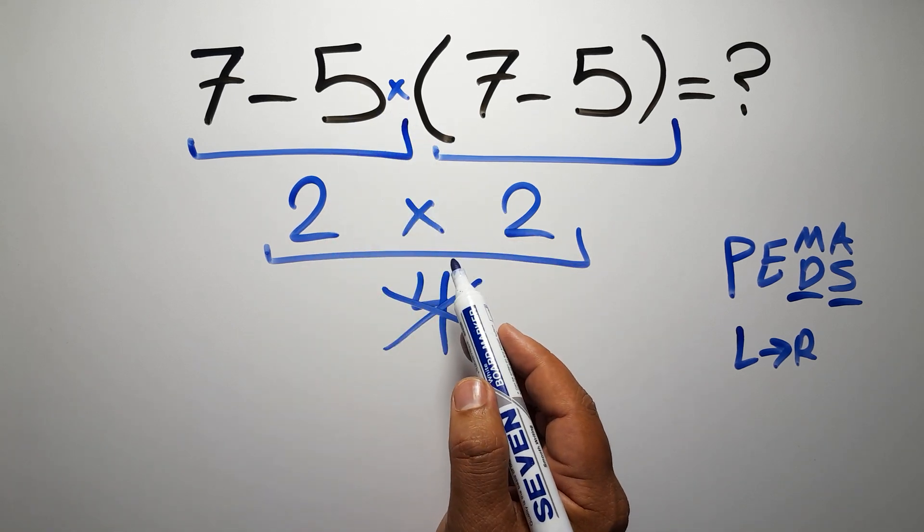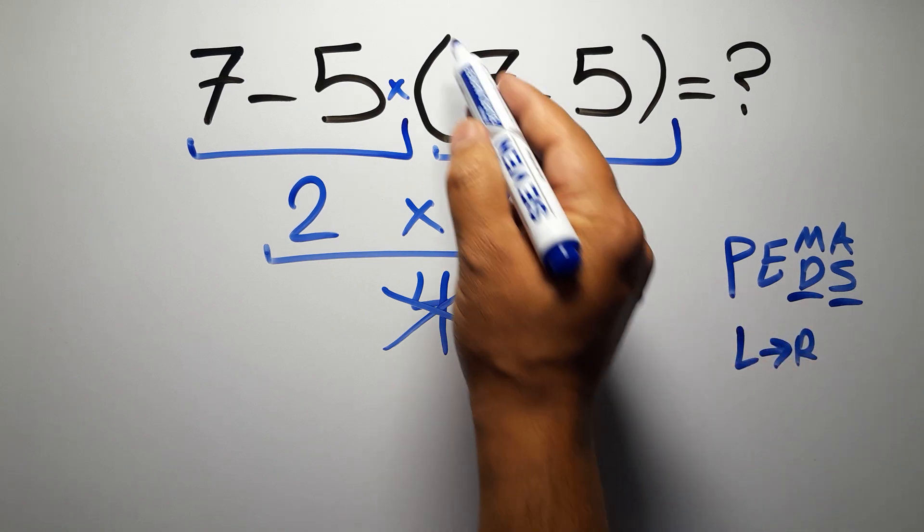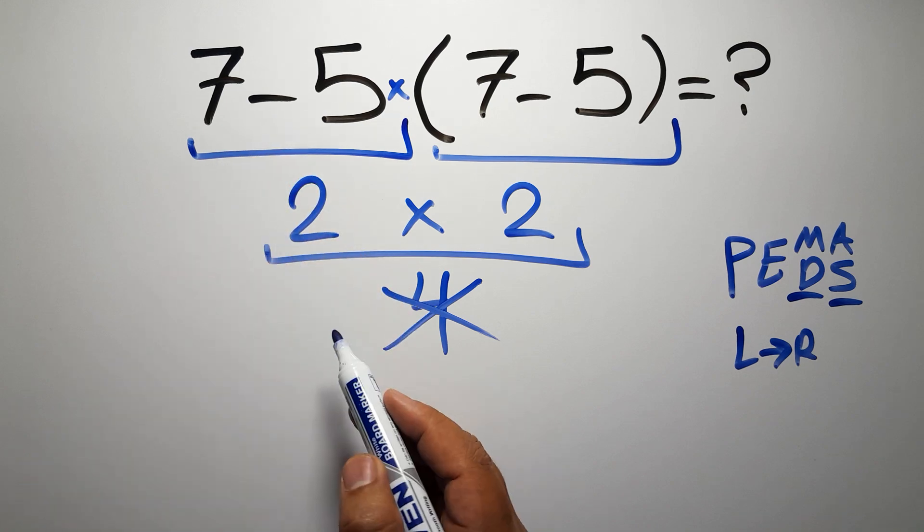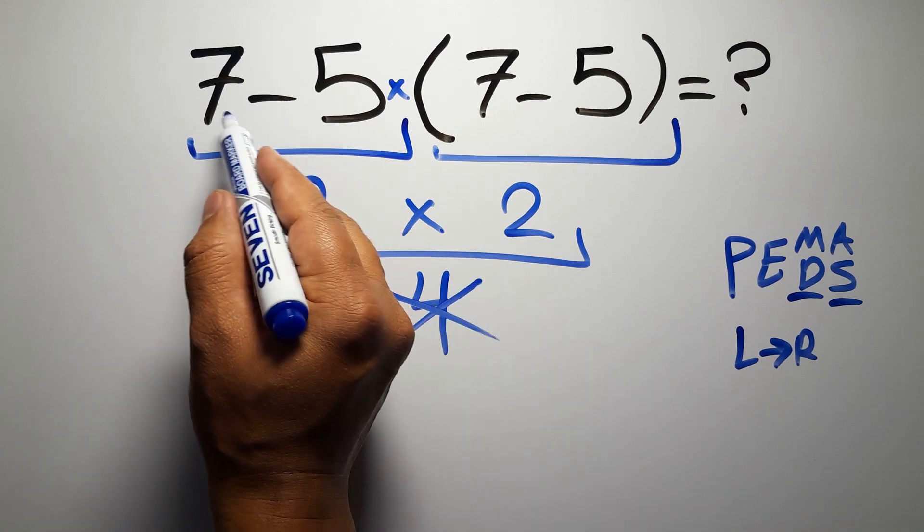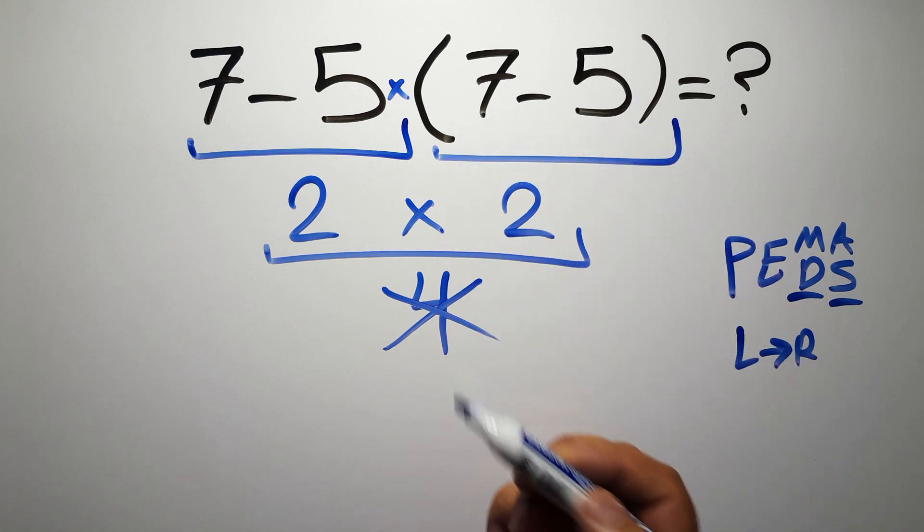So according to PEMDAS, first we have to do this parentheses, then this multiplication, and finally this subtraction. If we do this subtraction before this multiplication or this parentheses, it is wrong.